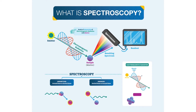Due to absorption, the electrons move from the ground state to the excited state. After that, the electrons come back from the excited state to the ground state with emission, and this emission is recorded by the spectrometer. The spectrometer converts these emissions into signals which we basically read to analyze the sample. So this is the whole process of how spectroscopy works.